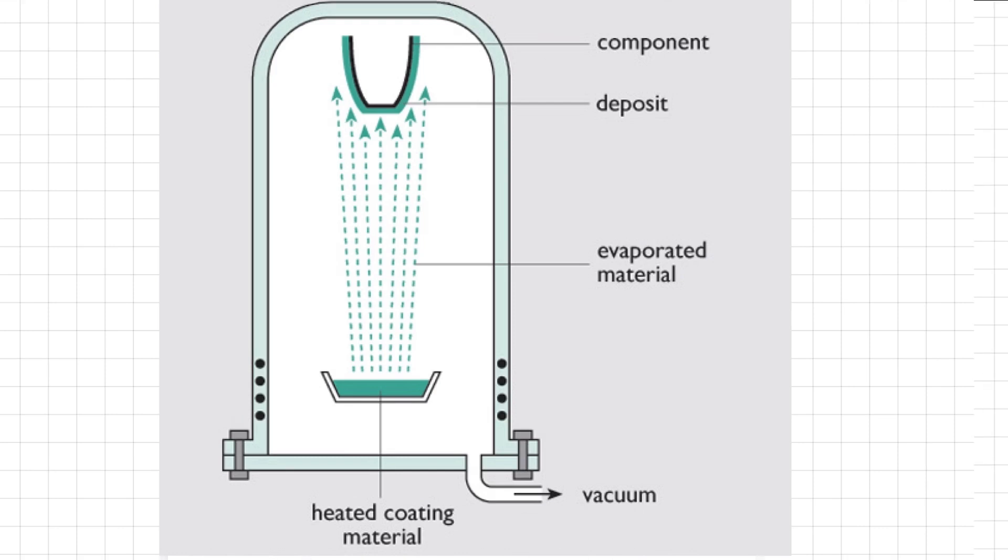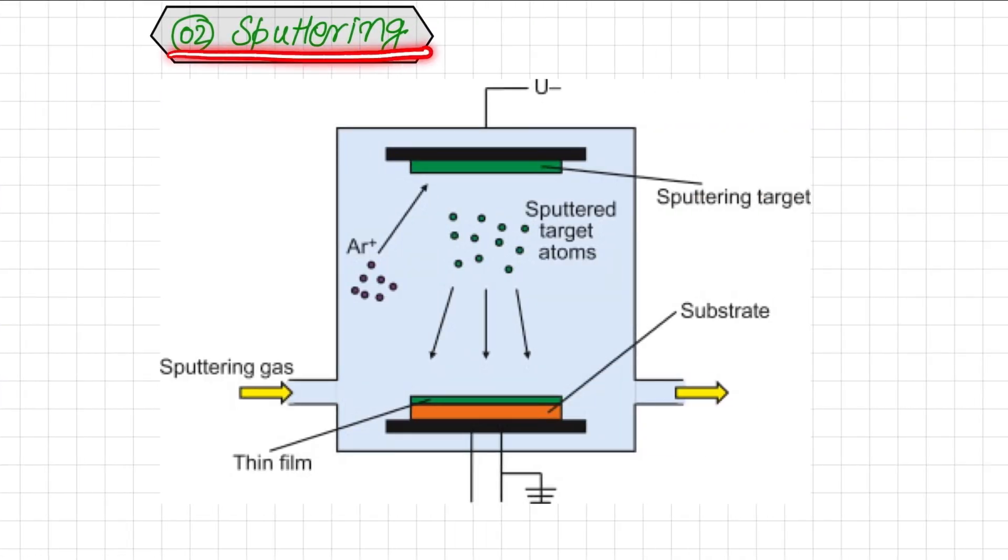The second PVD method is called sputtering, and the diagram of this sputtering is shown in the figure. The source materials used in this process are generally an alloy, ceramic, or compound. In this technique, a high-energy atom is ionized from argon and it is used to hit the surface atoms of the target source material. Then the knocked-out atoms in vapor form are deposited on the surface of the substrate to produce a uniform coating.